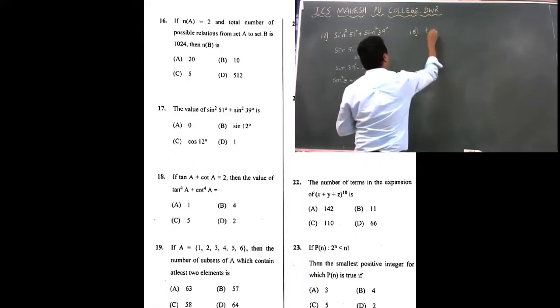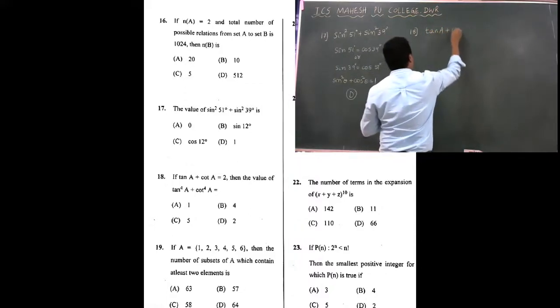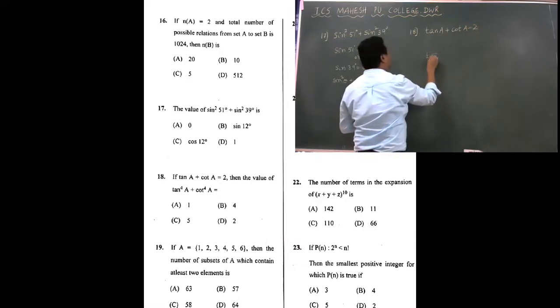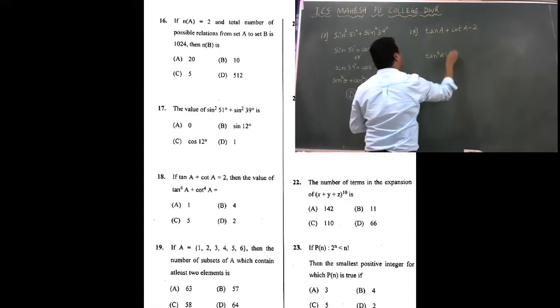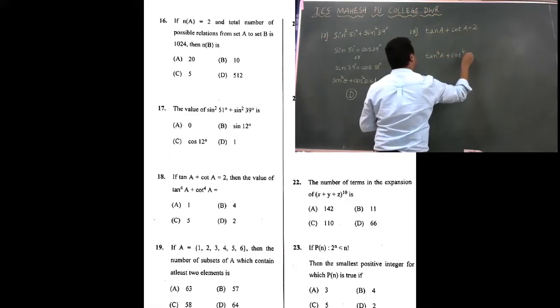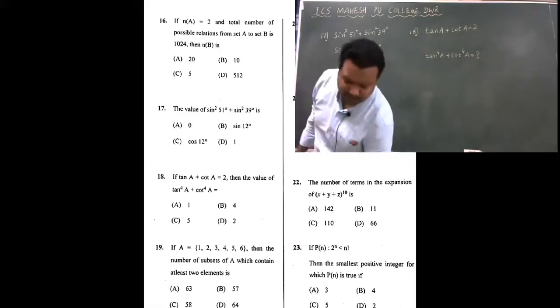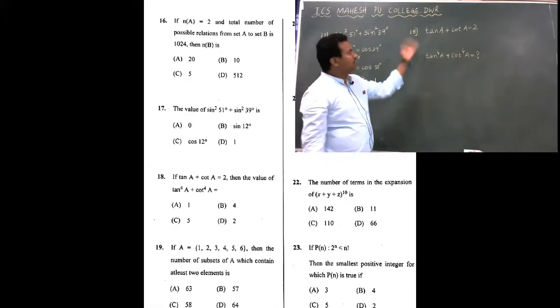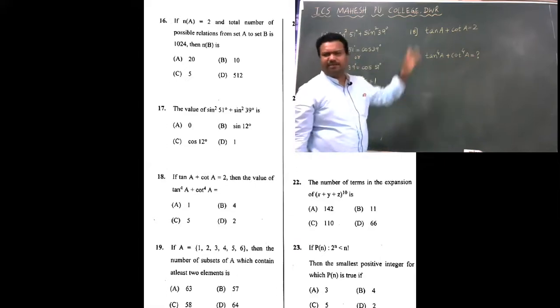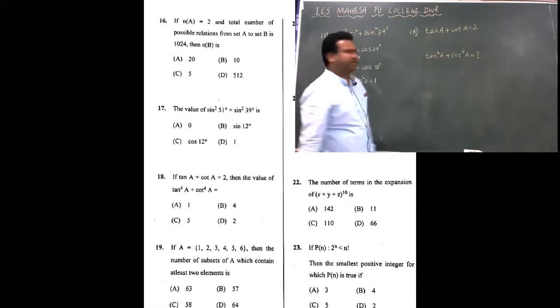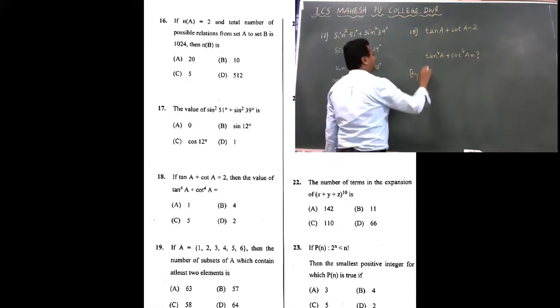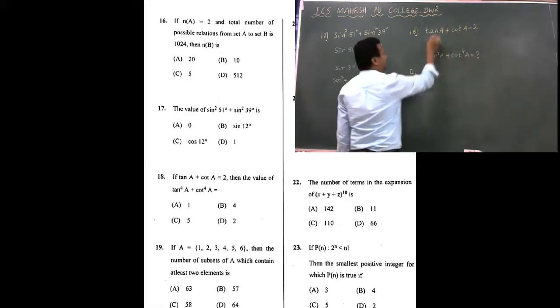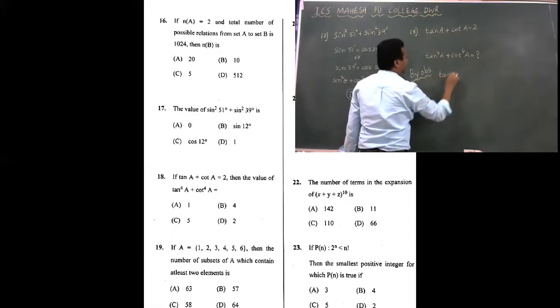Let's go for the next question. For the 18th question, again on trigonometric function, tan A plus cot A is equal to 2. Then find the value of tan raised to 4A plus cot raised to 4A. If you want to solve this question, then taking LCM and everything is one procedure. What is another procedure? Just by observation, just by observing the problem, we know that both values are the same.